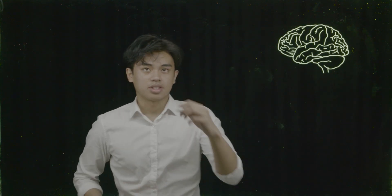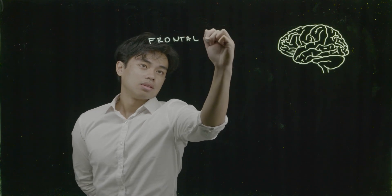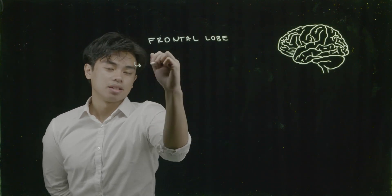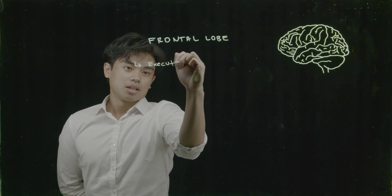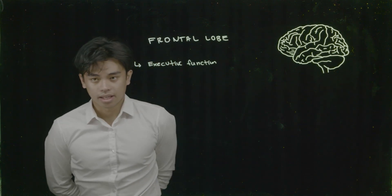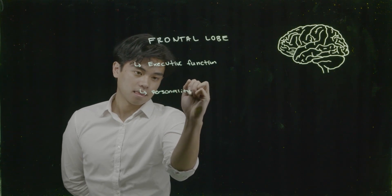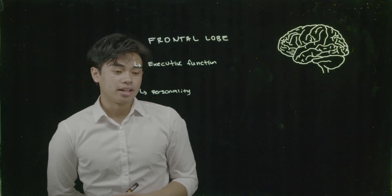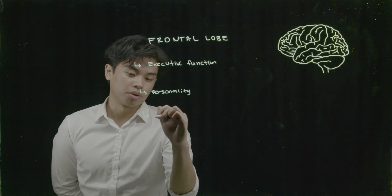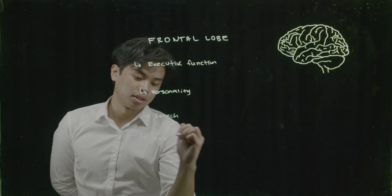These two fingers in the front — our pinky finger and our ring finger — represent our frontal lobe. The frontal lobe has many specializations, including executive functions such as decision-making. It is responsible for our personality, contains an area called Broca's speech area which is crucial for speech, and also our sense of smell, which we'll go through later.